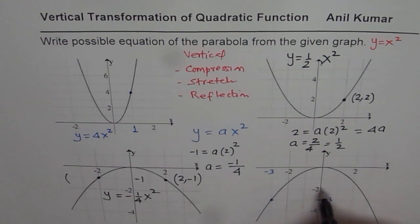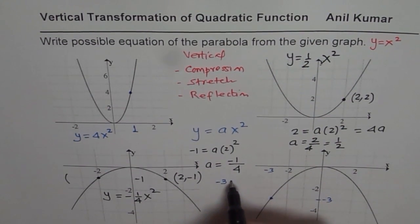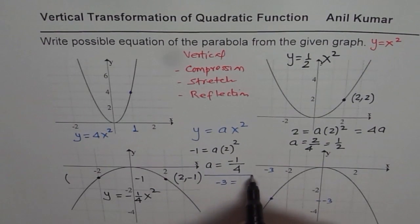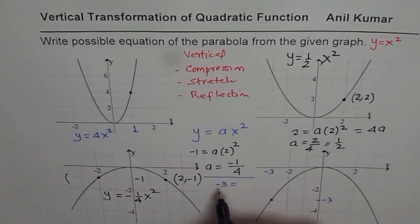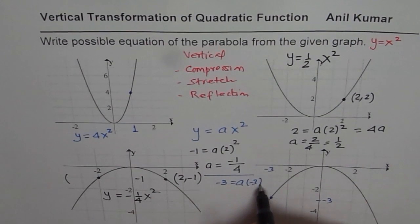Substitute minus 3 for y. We will write minus 3 for y. Let me do it here itself. Minus 3 equals to, this is for part D, minus 3, a times minus 3 square.